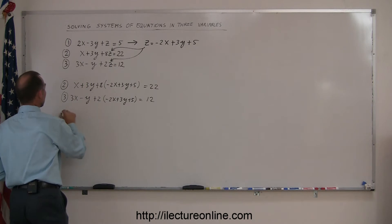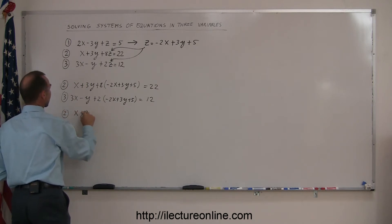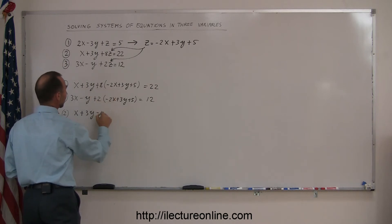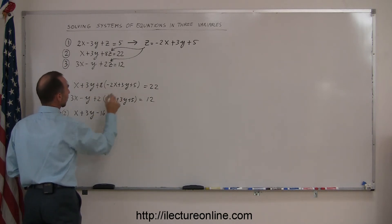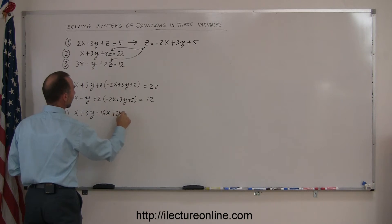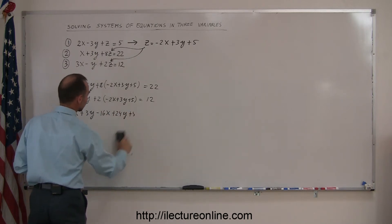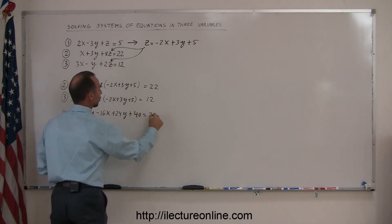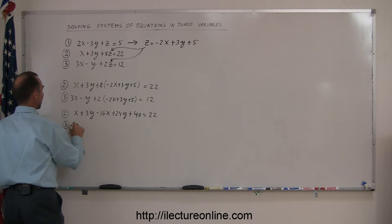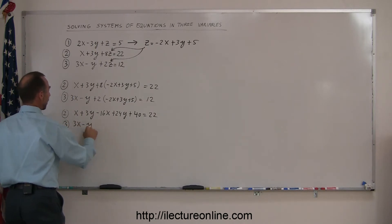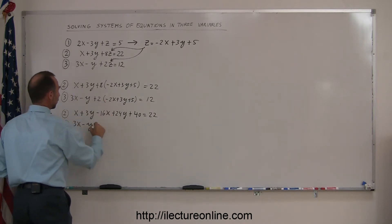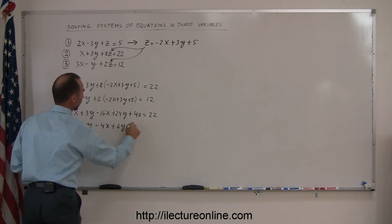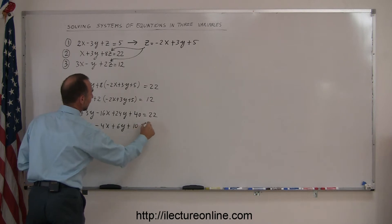Equation number two becomes x plus 3y plus — actually minus — because 8 times minus 2 is minus 16x, 8 times 3y is 24y, and 8 times 5 is plus 40, and that equals 22. And equation number three: we get 3x minus y, 2 times minus 2 is minus 4x, 2 times 3y is plus 6y, plus 2 times 5 which is 10, equals 12.